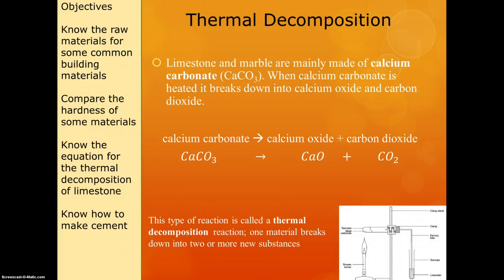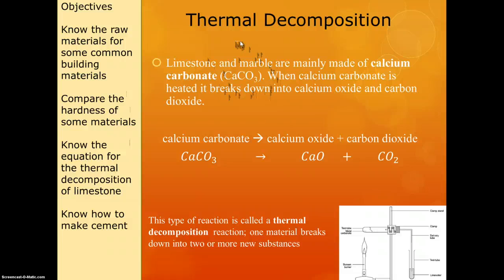Both limestone and marble are mostly made up of calcium carbonate, CaCO₃. When you heat calcium carbonate it breaks down into calcium oxide and carbon dioxide. You need to know both the word equation and the symbol equation. The word equation is: calcium carbonate → calcium oxide + carbon dioxide. The symbol equation is: CaCO₃ → CaO + CO₂.